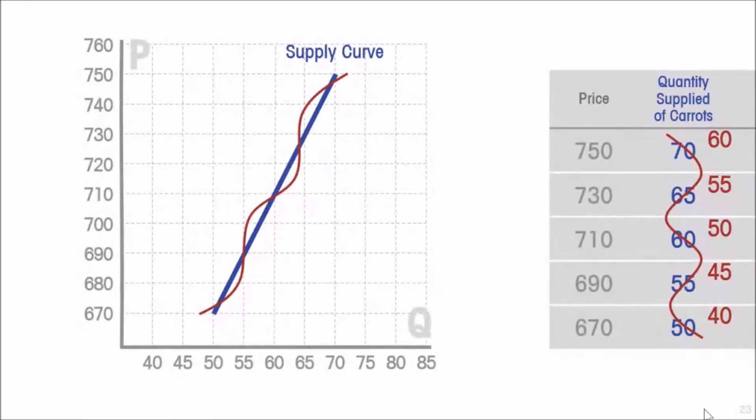And the supply of carrots falls at every possible price. Then when we construct a new supply curve, all of those points and the line will be to the left.